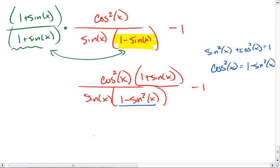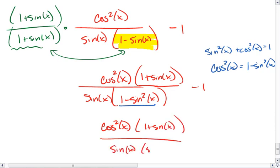So I can take up the 1 minus sine squared and plug in cosine squared, giving me cosine squared x, 1 plus sine of x, all over sine of x times cosine squared x, minus 1.